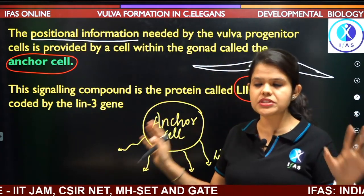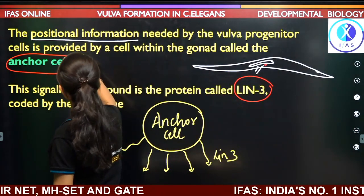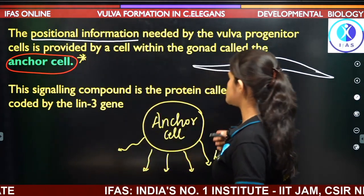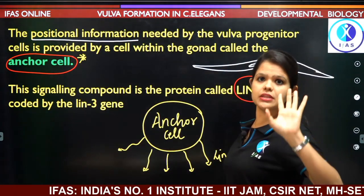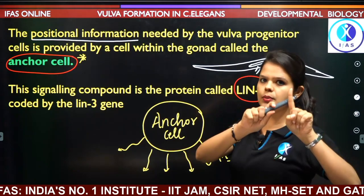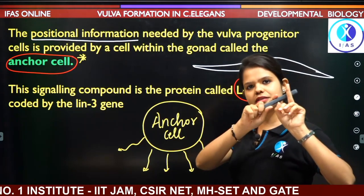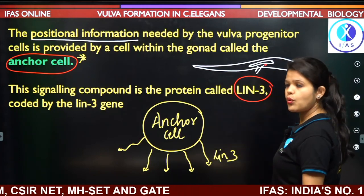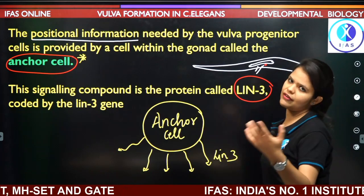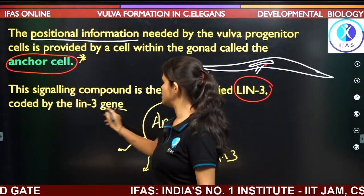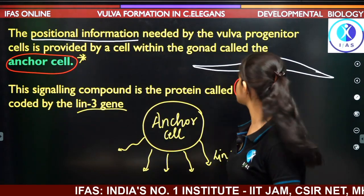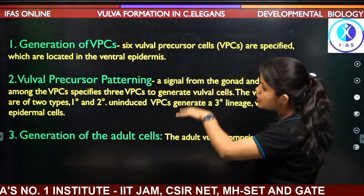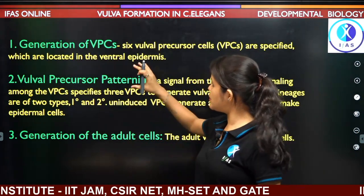This anchor cell is really very important — questions are often asked about what happens if anchor cells are destroyed. The anchor cells are present in the gonad and they secrete LIN-3 protein, which is encoded by the lin-3 gene. Now let's discuss the vulva development process, which can be studied under three major steps.